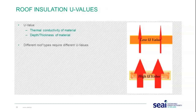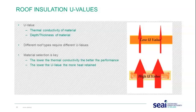Different roof types require different U-values. Material selection is key — the lower the thermal conductivity of the material, the better the performance and the lower the U-value, meaning more heat is retained within the dwelling. We need to maintain the U-value especially on items like flooring and the hatch.